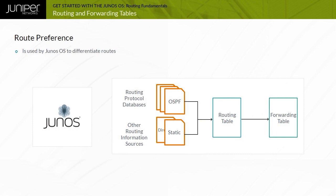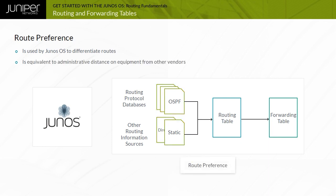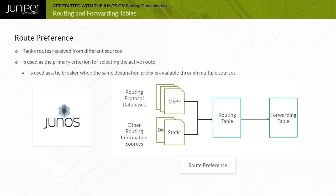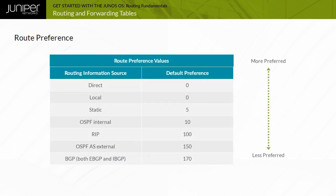Junos OS uses route preference to differentiate routes received from different routing protocols or routing information sources. Route preference is equivalent to administrative distance on equipment from other vendors. Junos OS uses route preference to rank routes received through the various route information sources, and as the primary criterion for selecting the active route. This table shows the default preference values for a selected set of routing information sources.